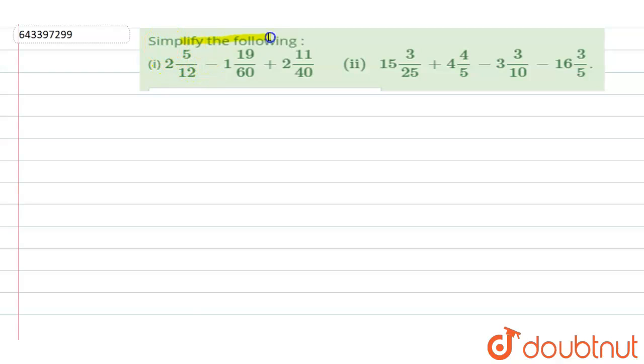The question says simplify the following. First one is 2 5/12 minus 1 19/60 plus 2 11/40. Second question is 15 3/25 plus 4 4/5 minus 3 3/10 minus 16 3/5. So we have to simplify these two expressions.